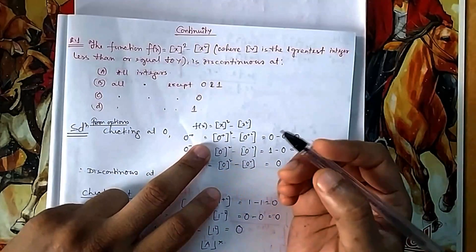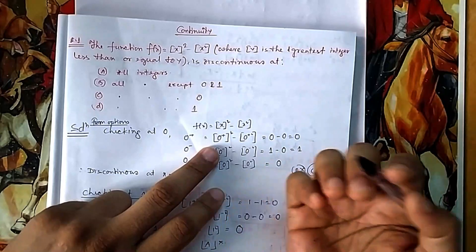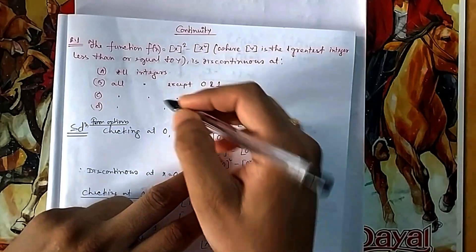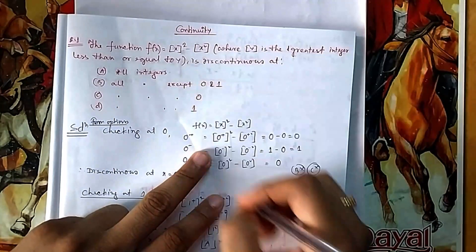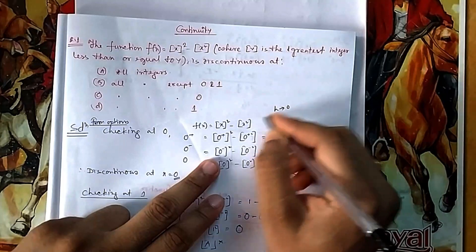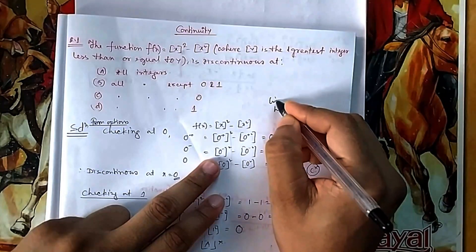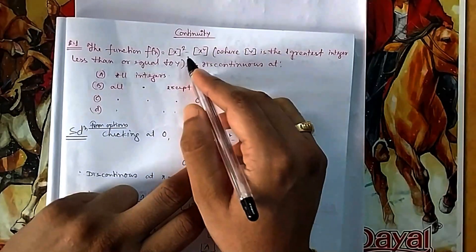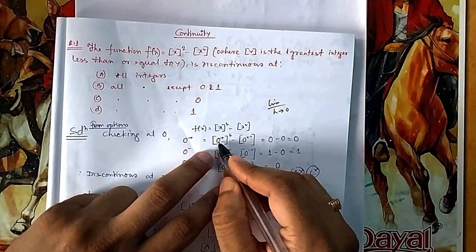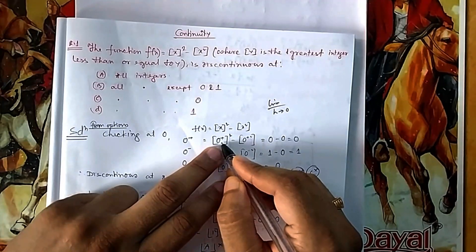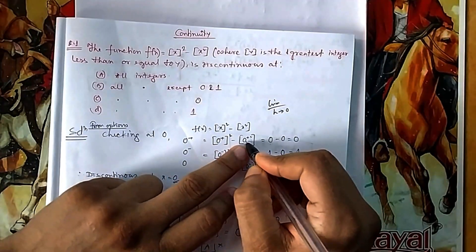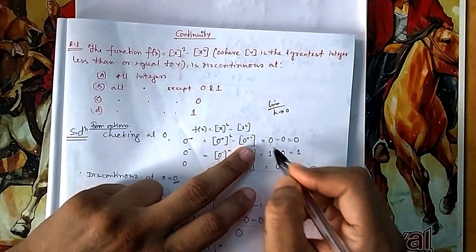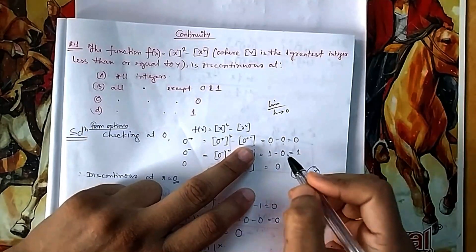Start by checking at x = 0 using left and right hand limits. For the right-hand limit (0+), box(0+) gives 0 since 0.0001 floors to 0, and [0.0001²] also gives 0. So the RHL of [x]² is 0, and similarly [x²] gives 0. Therefore RHL = 0.